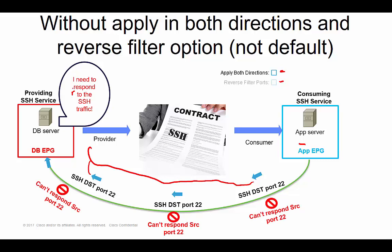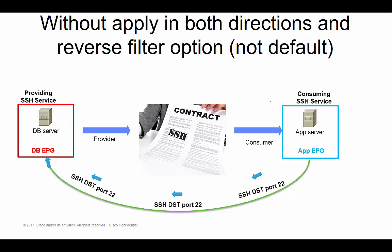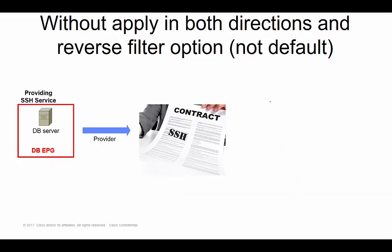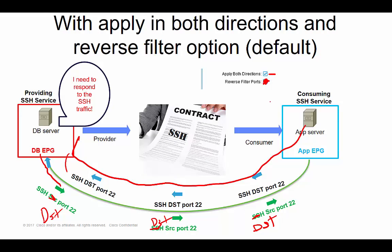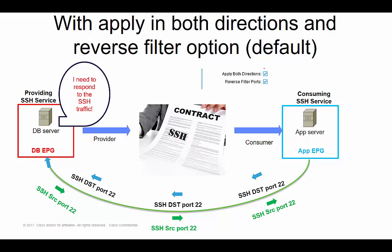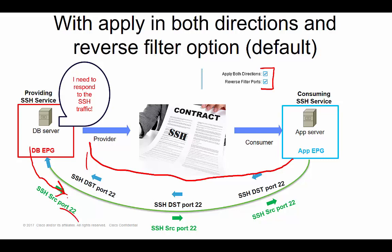I did some research on why you'd want to leave these unchecked. What I found is that it gives you more flexibility in how you define your filters. The common way — with default settings — is bidirectional: you allow the consumer EPG to communicate to the provider on the destination port, and then allow the database devices to flip that destination port to become the source port so they can respond.